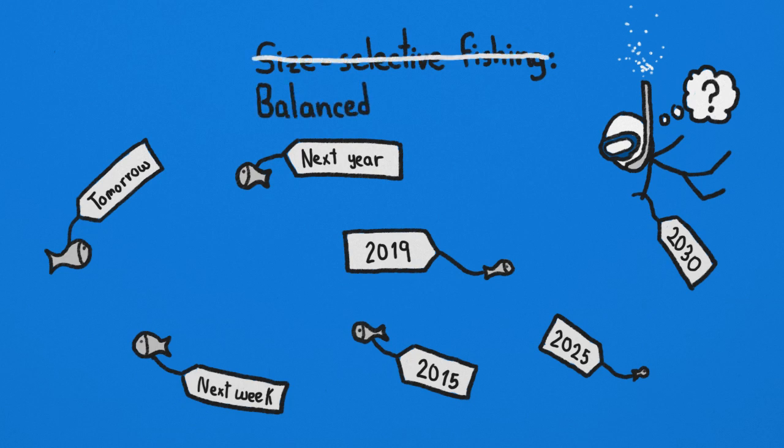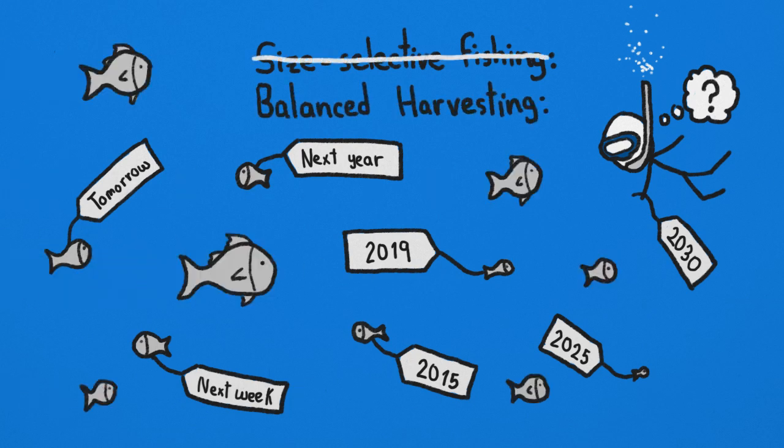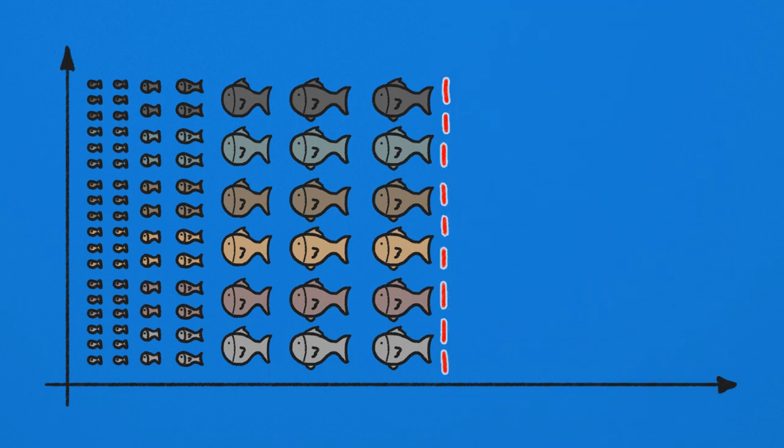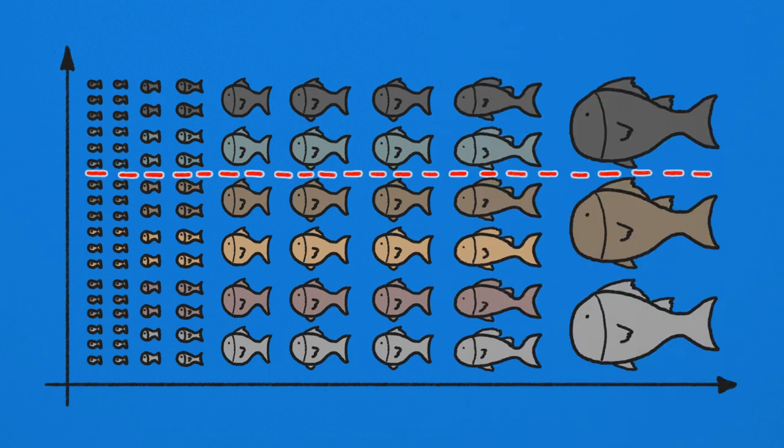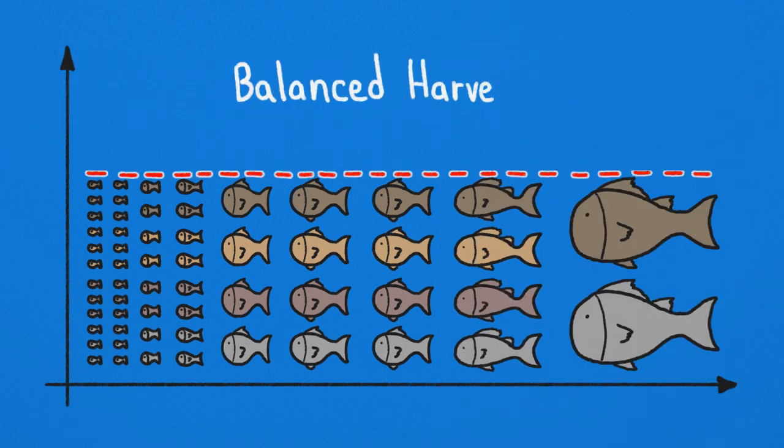And in fact, there's a new idea called balanced harvesting, ready to save the day. Instead of reeling in all the largest individuals, fishermen would catch a smaller number of fish across a wider range of sizes, keeping the numbers and sizes of fish, well, balanced.